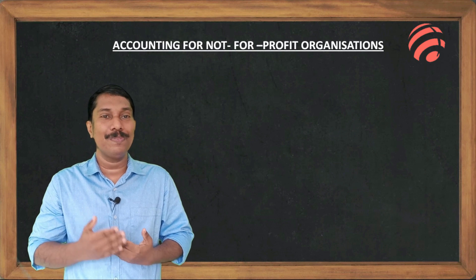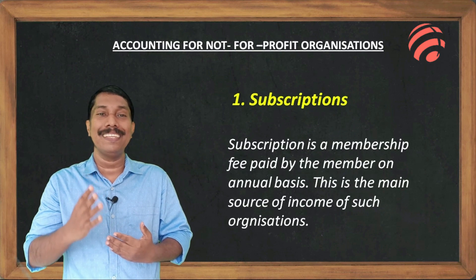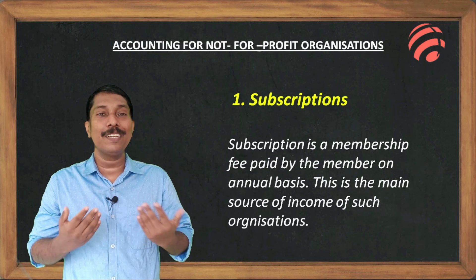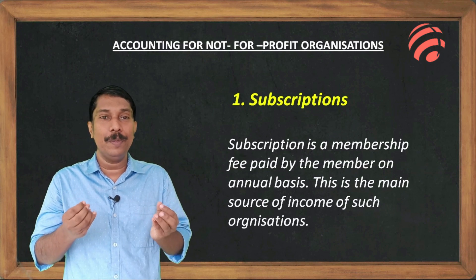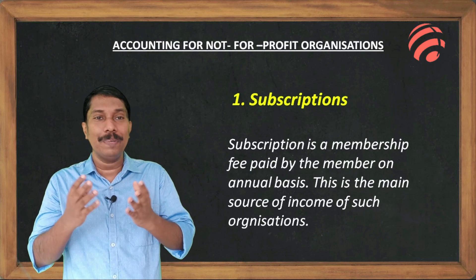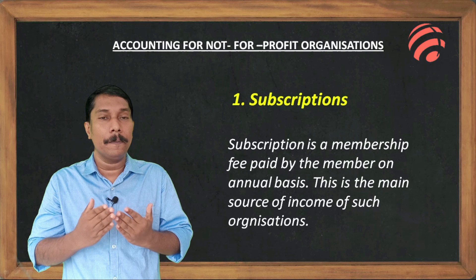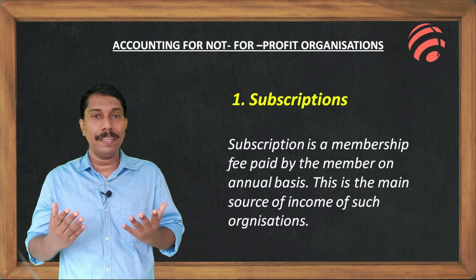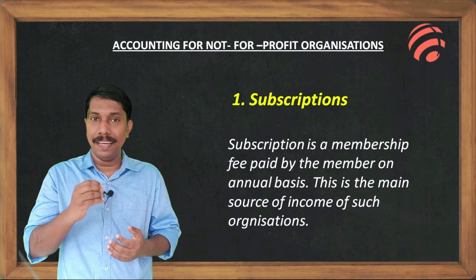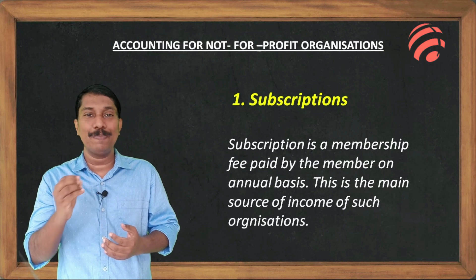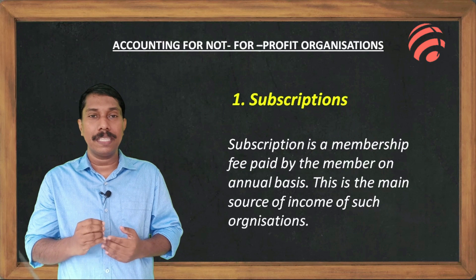First of all, subscription is the main source of income of a non-profit organization. It is collected from the members. Subscription is treated as a receipt in the receipt and payment account, but it is treated as income in the income and expenditure account.